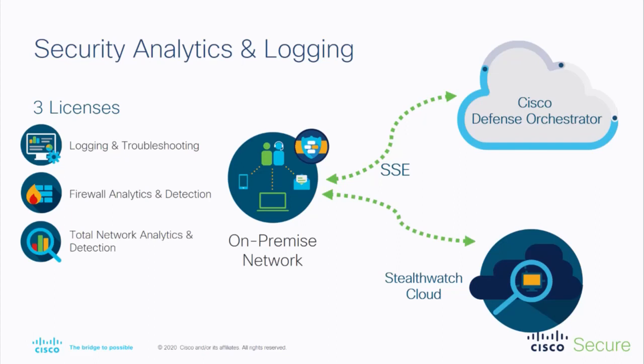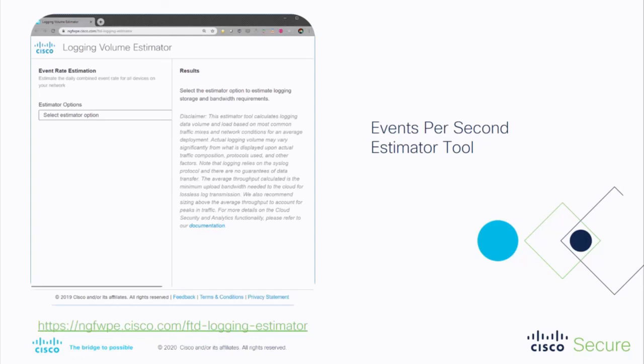You can get either one of three licenses. Logging and troubleshooting gives you access to viewing, filtering, and searching all the logs in your CDO viewer. The second package adds access to Stealthwatch Cloud. The third package gives you both of the above plus private network monitoring. If you want to understand the throughput for cloud storage in your network, you can use a tool on Cisco.com to understand what it looks like for your organization.